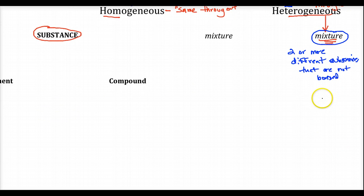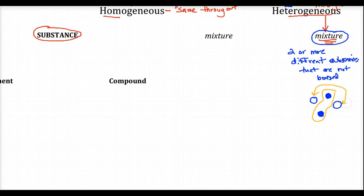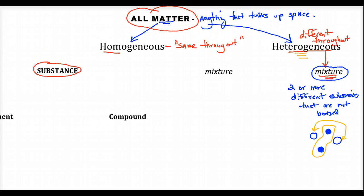If I draw a mixture of two things — one type of circle and a different type of circle — I've got two different types of circles put in the same vicinity, not chemically bonded. Think about a salad, seeds in a watermelon — these represent heterogeneous mixtures. Most mixtures are heterogeneous; they're not the same throughout.